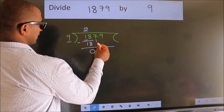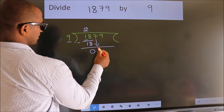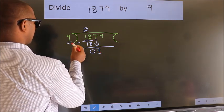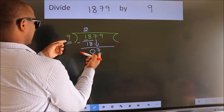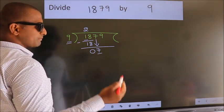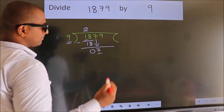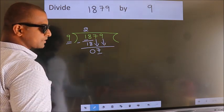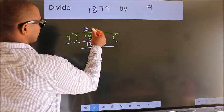After this, bring down the next number, so 7 comes down. Here we have 7. 7 is smaller than 9, so we should bring down the second number. The rule to bring down the second number is to put 0 here.